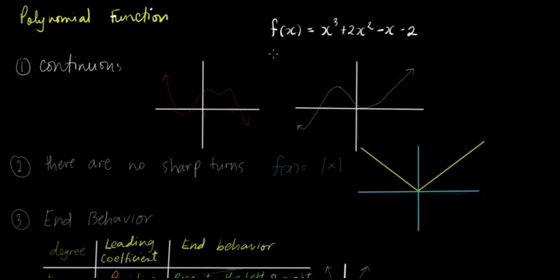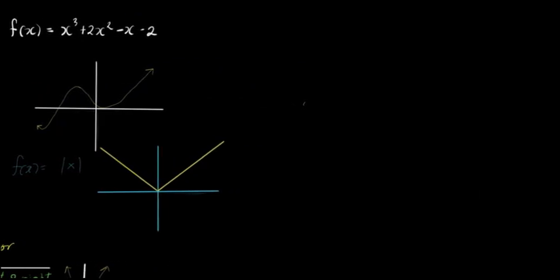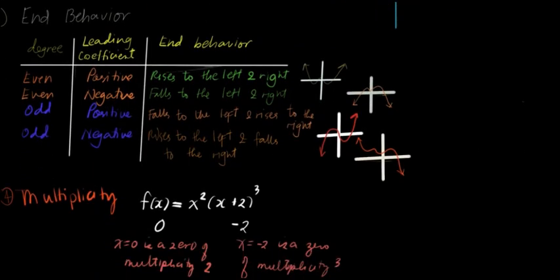Okay, let's sketch the graph of f of x equals x cubed plus 2x squared minus x minus 2 on this side. Here are the steps that we need to follow to sketch the graph of this polynomial function. First one is we need to determine the end behavior. You can review the previous video for this.